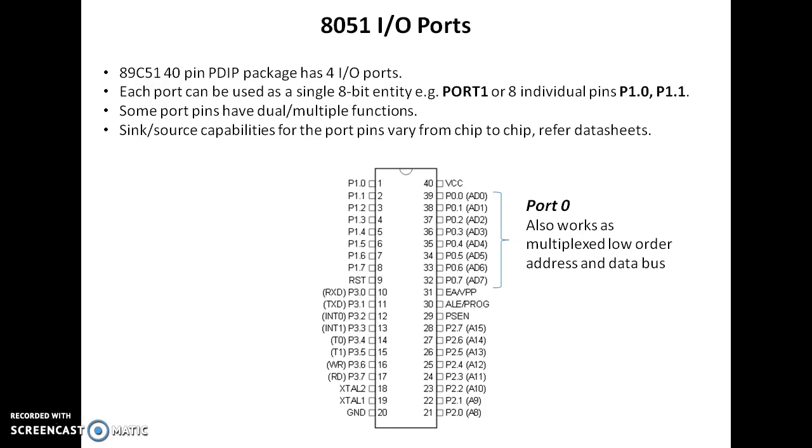Port 0 has additional feature of multiplexed low-order address bus and data bus. So either I can use it as a port or I can use it as an address and data bus multiplexed. Port 1 has got no dual functions.